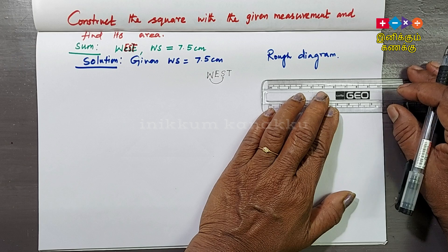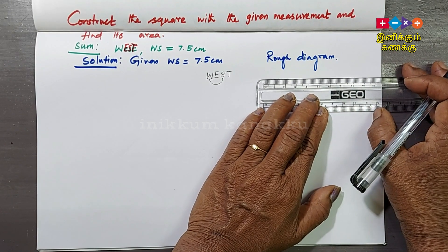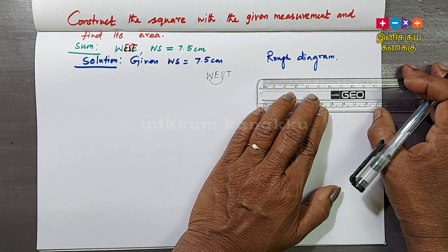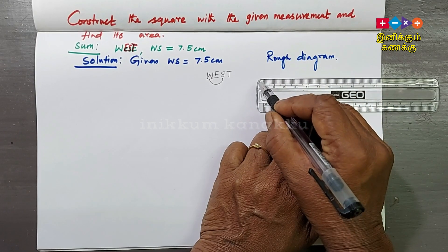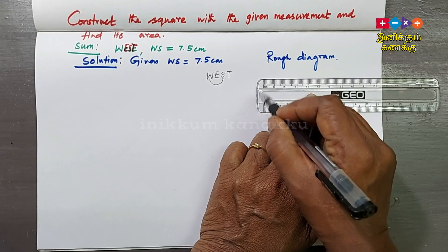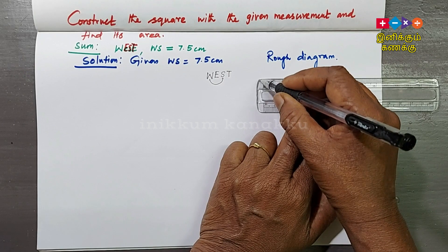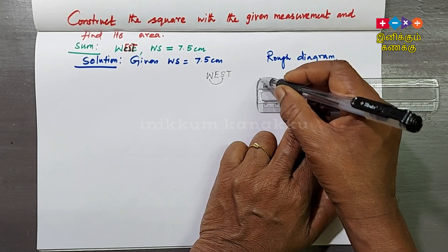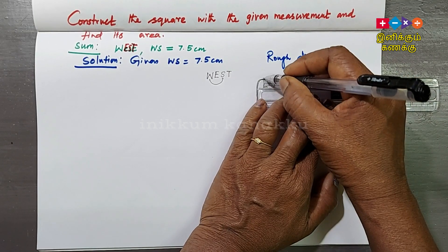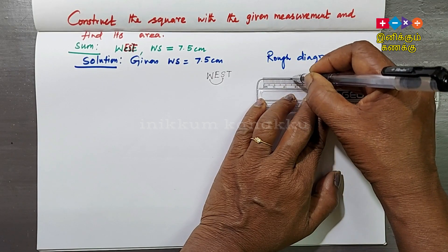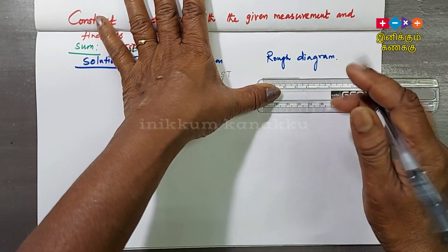First, this is a rough diagram. In the rough diagram, the sides are equal. Here, already in level one, the sides are looking equal.